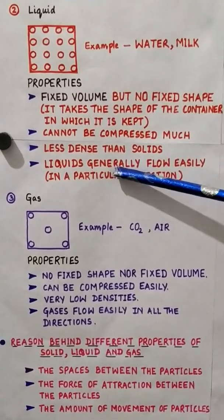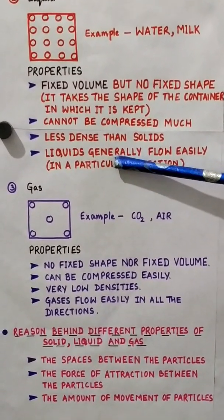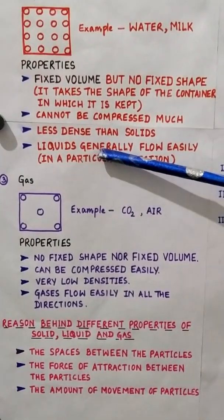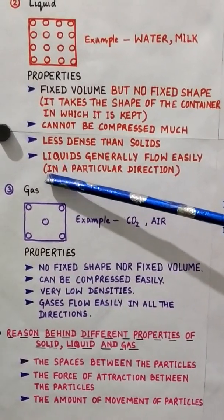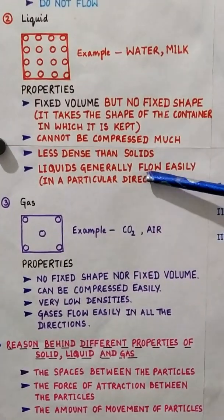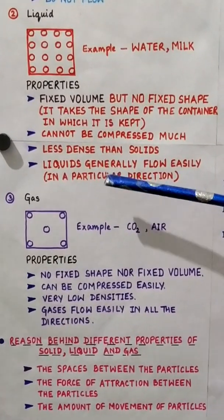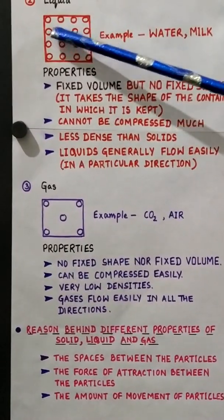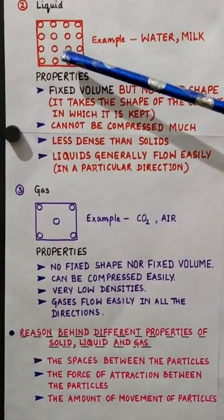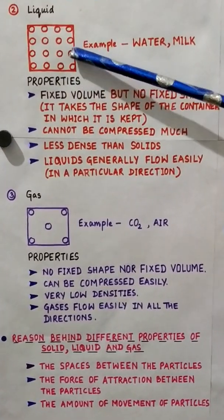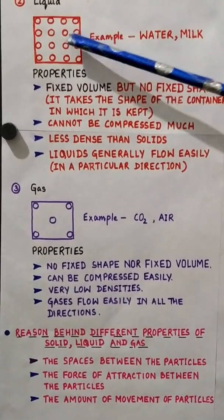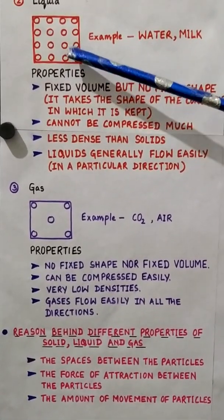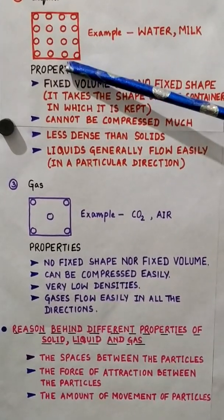Liquids generally flow easily. We have all seen liquids flowing from a higher level to a lower level. Since the particles have some space between them and a little less force of attraction, the particles are allowed to move away from each other. Also, the particles of liquids can slide over one another, which is why liquids have the tendency to flow.